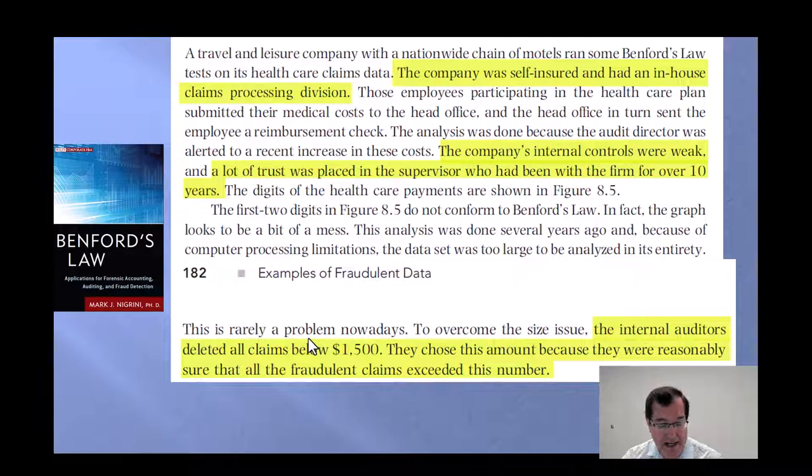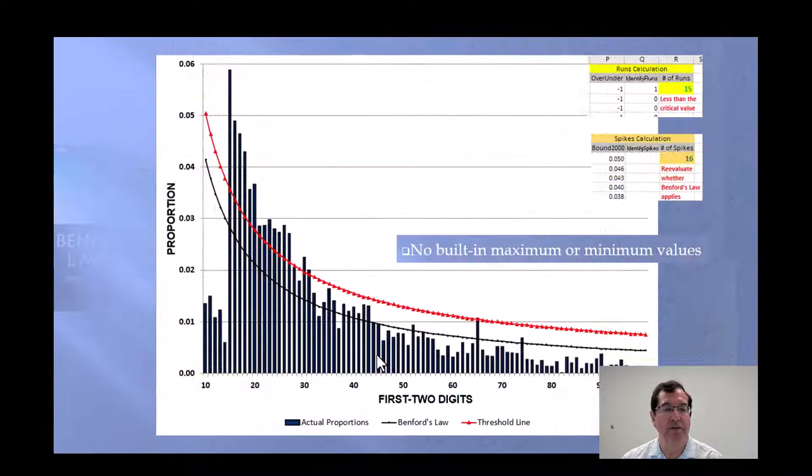Here is another example. The company was self-insured. These are the claims, the health insurance claims that they paid out. Weak controls, a lot of trust. Because of the size issue, the internal auditors deleted all claims below $1,500 and then proceeded to analyze the data to see whether it conformed to Benford's law. And what we have here is a complete mess, because we do have a threshold operating $1,500. There are a huge number of spikes all cruising around there and one over there. We have indeed 16 spikes and now the conclusion is re-evaluate whether it should have conformed to Benford's law in the first place. The answer here is no.